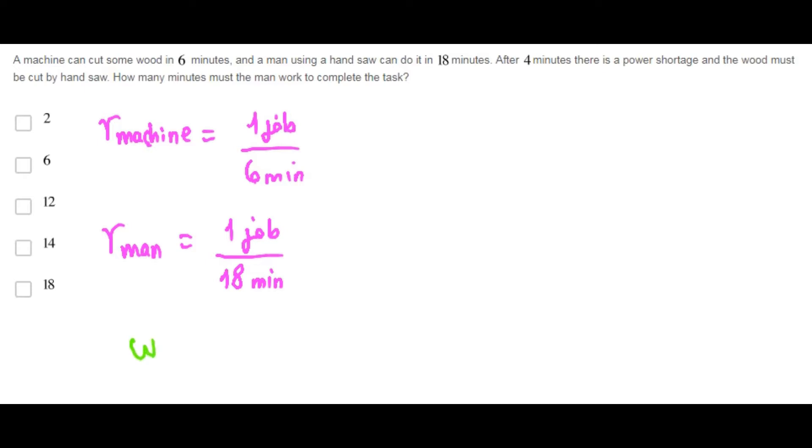Remember that work is the rate times the time. Now, after 4 minutes there is a power shortage therefore the machine worked only 4 minutes and the part of the job that the machine did is its rate times the time.